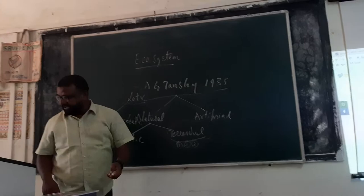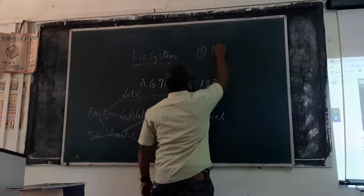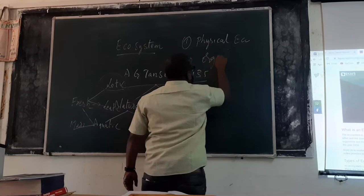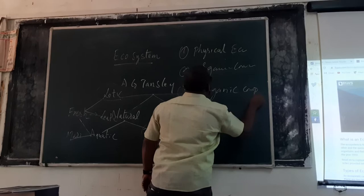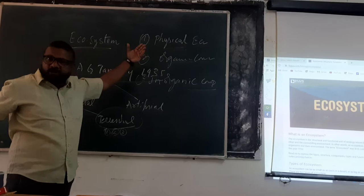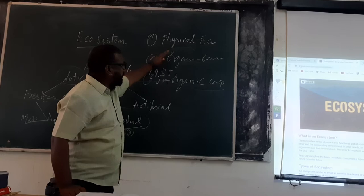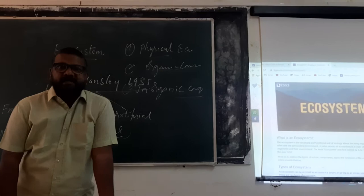Based on this, he classifies the ecosystem basically into three types of components. Kinds of ecosystem components may be classified into three types. One is called as physical components, second one is called as organic components, and third one is called as inorganic components. These include the physical conditions and climatic factors which will be influencing the biotic factors. The physical components examples we can say: pH, sunlight, temperature, etc.